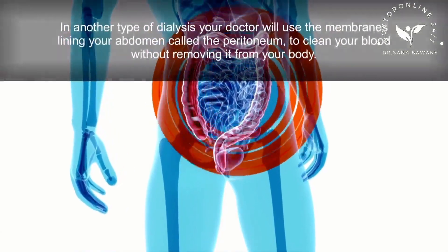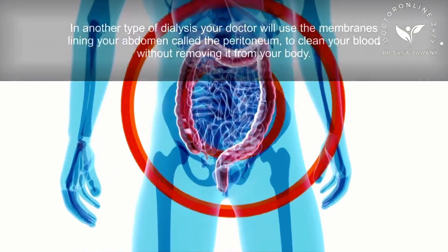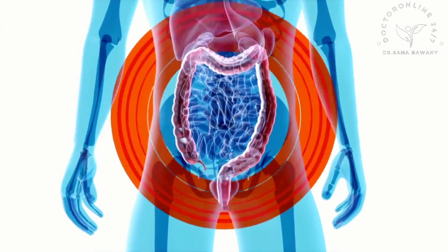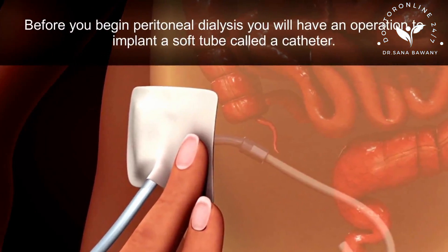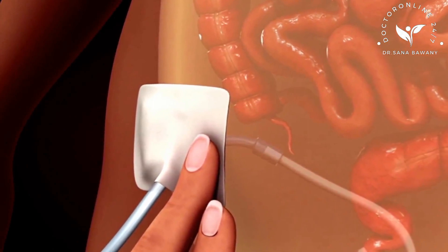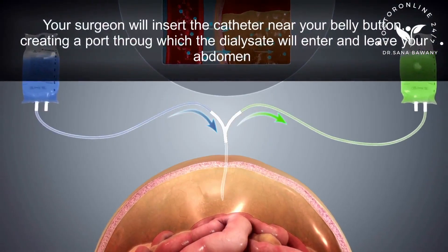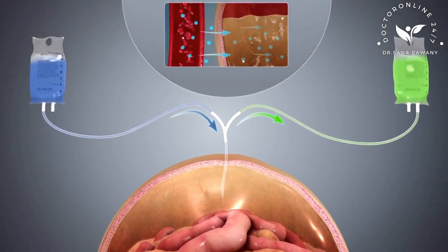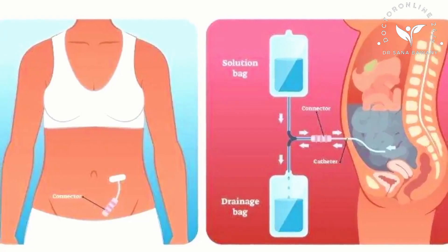In another type of dialysis, your doctor will use the membranes lining your abdomen, called the peritoneum, to clean your blood without removing it from your body. Before you begin peritoneal dialysis, you will have an operation to implant a soft tube called a catheter. Your surgeon will insert the catheter near your belly button, creating a port through which the dialysate will enter and leave your abdomen. Each peritoneal dialysis session is called an exchange.